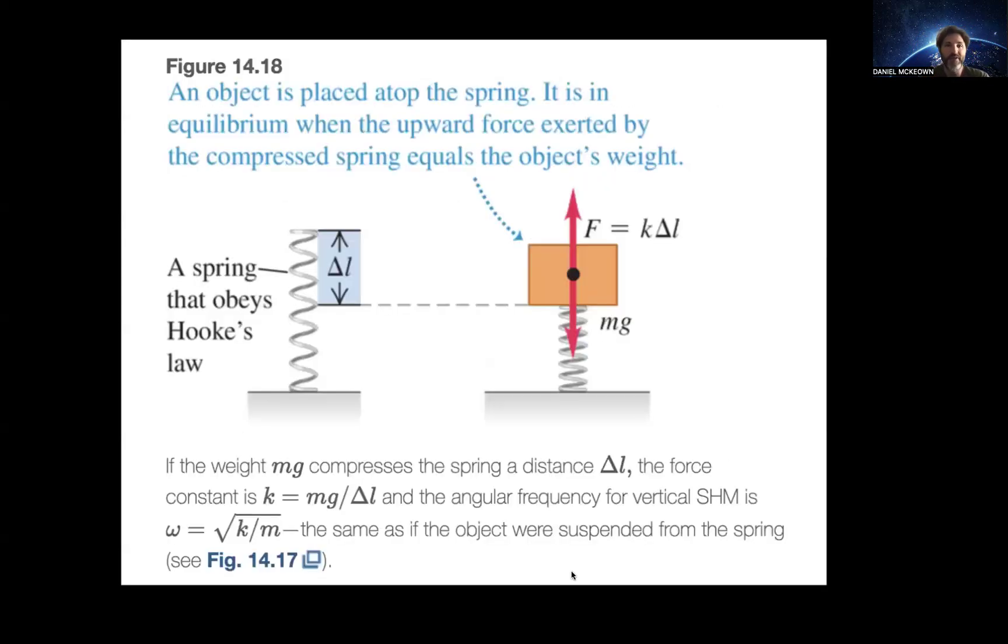And then we can see here that an object, when it's placed on top of the spring, it's in equilibrium. The net upward force exerted on the compressed spring equals the object's weight. And that's how typical scales work. We attach springs to scales. We know the scale's spring constant. We can tell what the weight of something is on the scale by how much force the object is exerting. So that's how we measure the mass and the weight of an object. We actually use springs in this practical way for traditional scales. So if the weight mg compresses the spring a distance delta L, the force constant k is then going to be equal to mg over delta L.